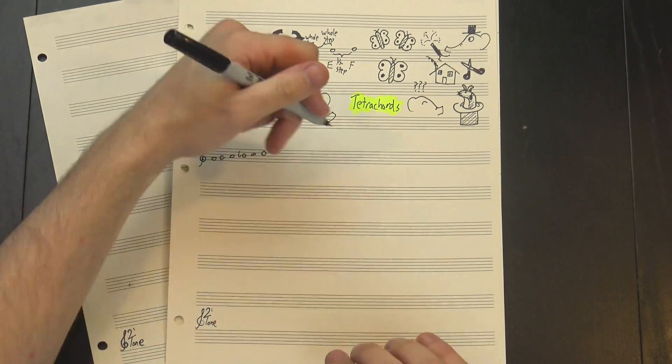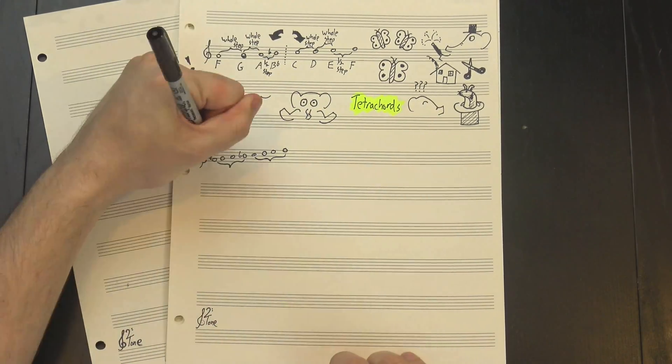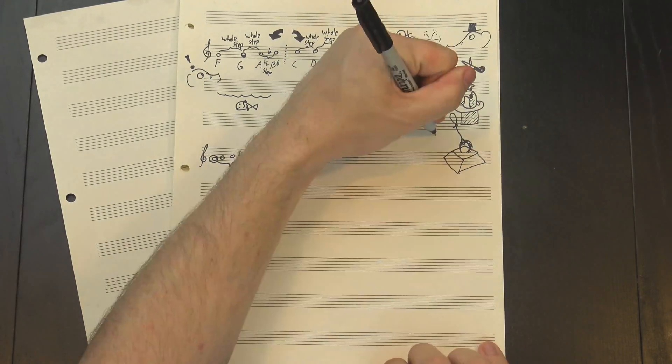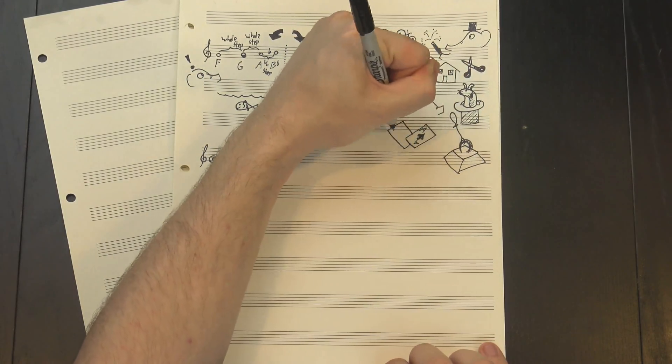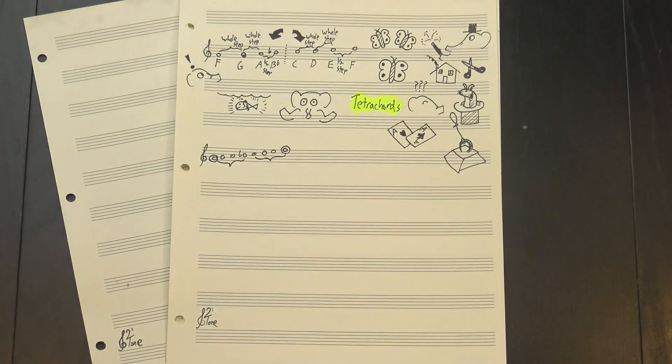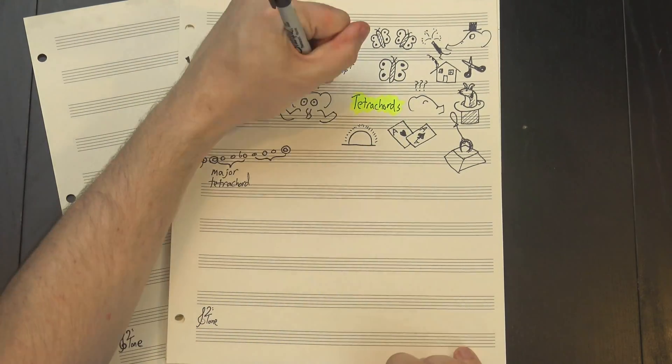Still, goofy name or not, tetrachords are a really powerful tool for building scales. You can take any seven-note scale, add in the octave, and then chop it up into a lower tetrachord and an upper tetrachord. Because the root and the octave are fixed points, we know where the lower tetrachord starts and where the upper one ends, which means all we need to do is choose which ones we're going to use, and voila! We've made a whole scale.